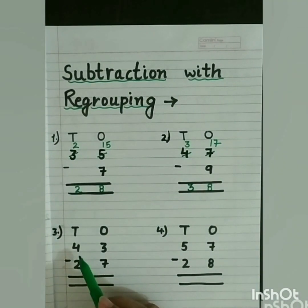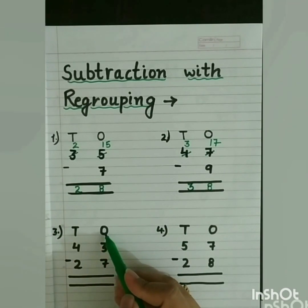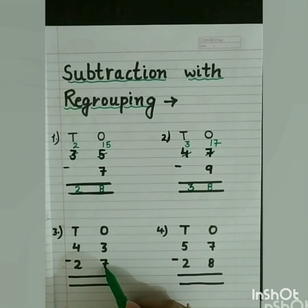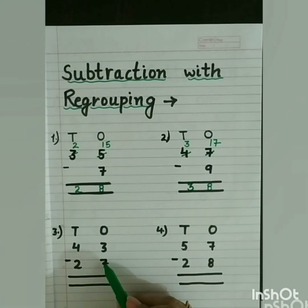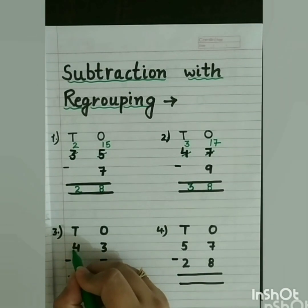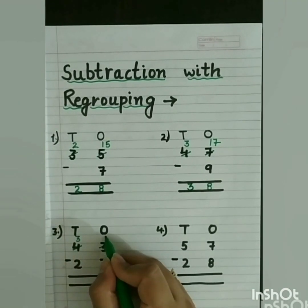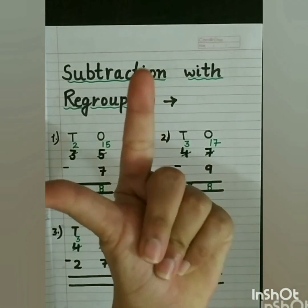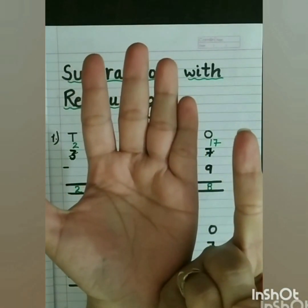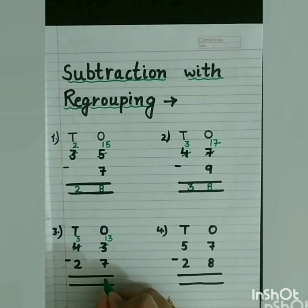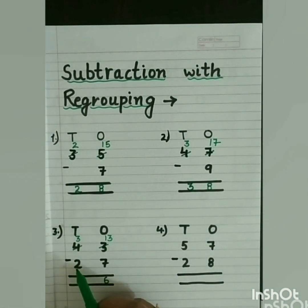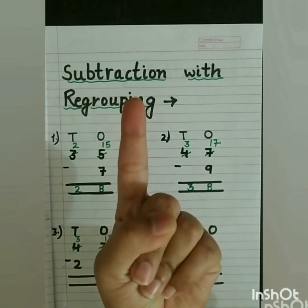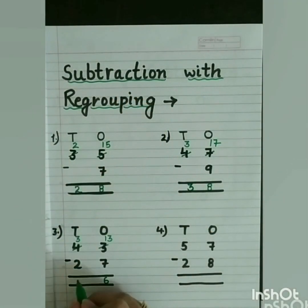Next sum: 43 minus 27. Start from the ones place. 3 minus 7 is not possible, so we borrow from tens place. 4 becomes 3 and 3 becomes 13. Now 13 minus 7: after 7, count till 13 — 8, 9, 10, 11, 12, 13 — that gives 6. Now 3 minus 2: after 2, count till 3 — that gives 1. So we write 1. The answer is 16.